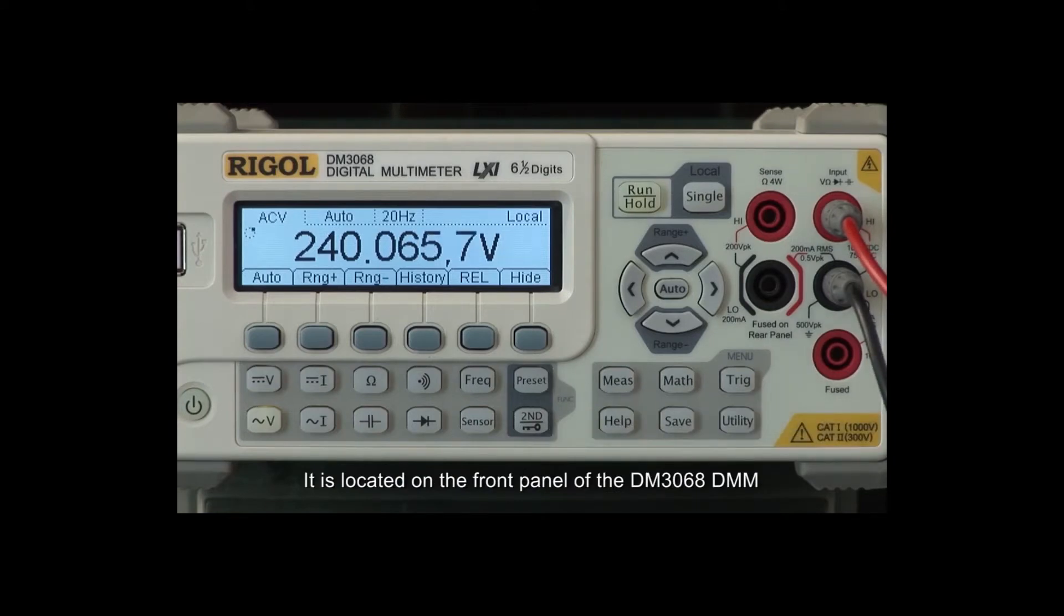It is located on the front panel of the DM3068 DMM. The Secondary Function Key has three applications.